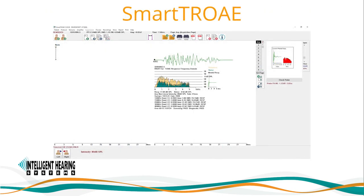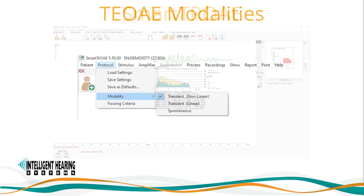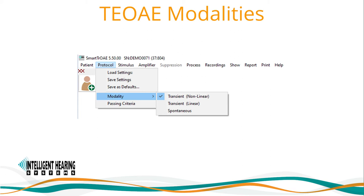Now let's move on to transient OAEs. Transient OAEs are generated by a non-linear system stimulated by transient stimuli, enhanced by an active process of the outer hair cells, and measured as a reflection. There are three testing modalities available. The first is non-linear, used for high-intensity recordings such as typical clinical TE-OAE measurements at 80 to 95 dB SPL. The second is linear, used for low-intensity testing such as suppression testing at 65 dB SPL. The third is spontaneous, which does not use a stimulus — it records any response present with or without a synchronization click.